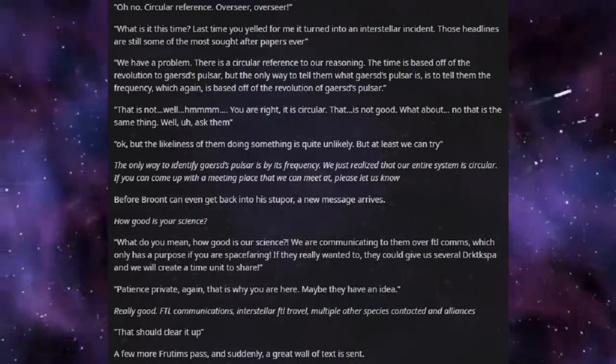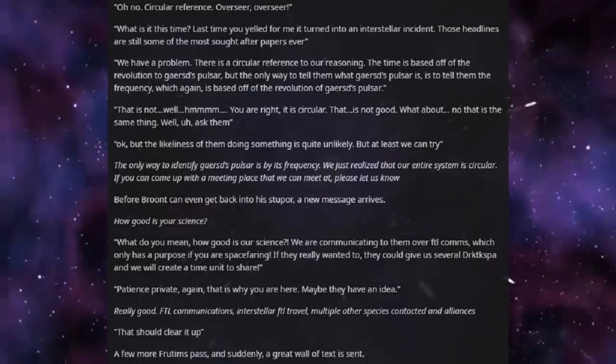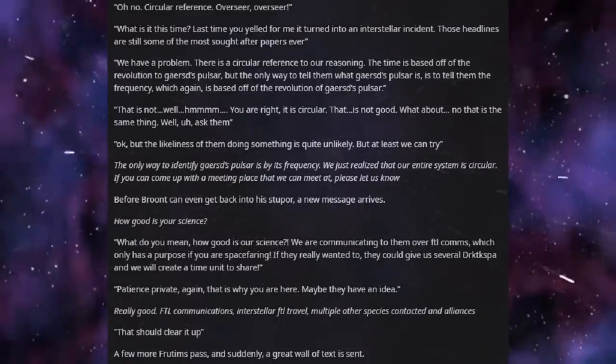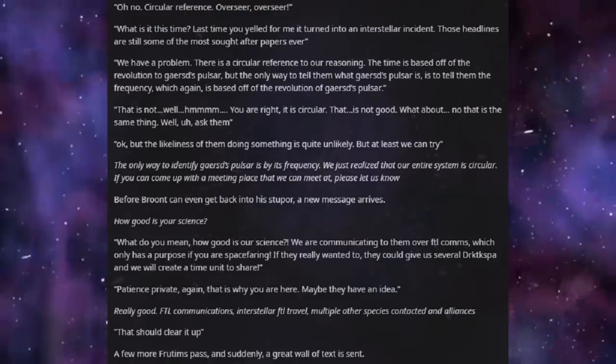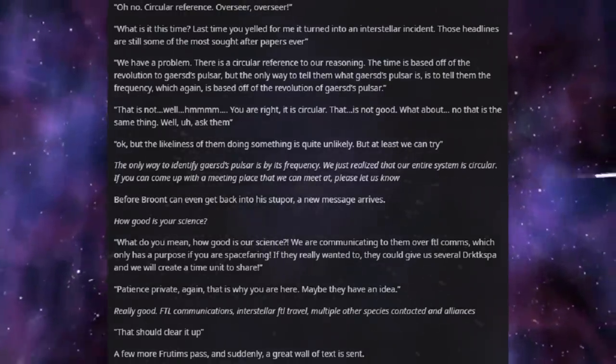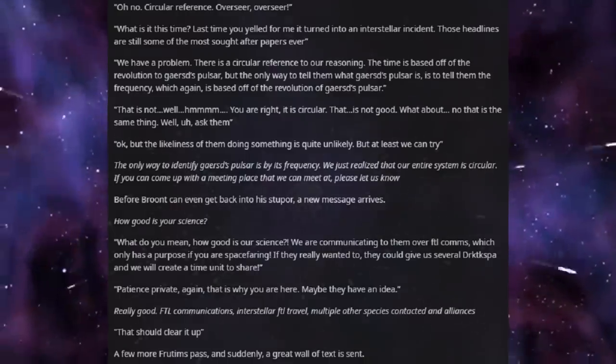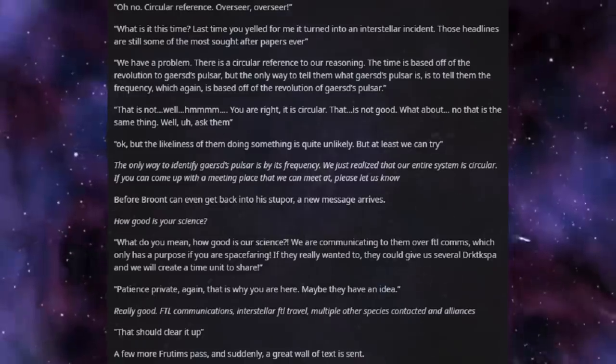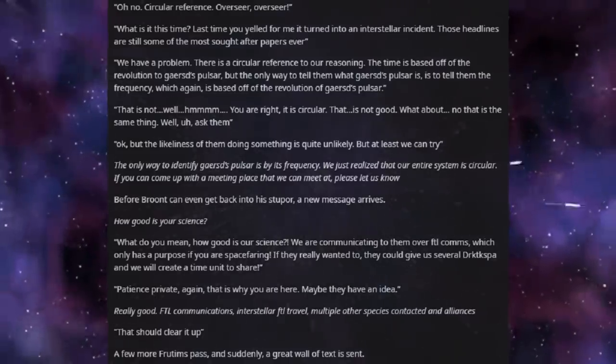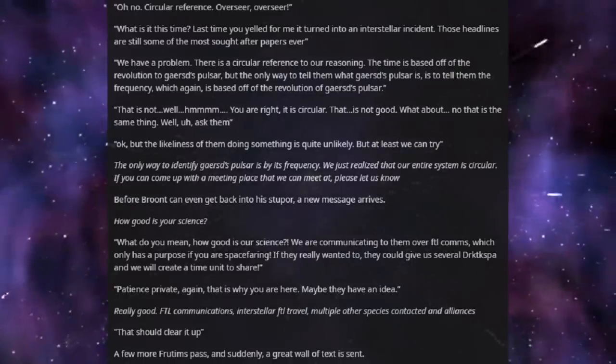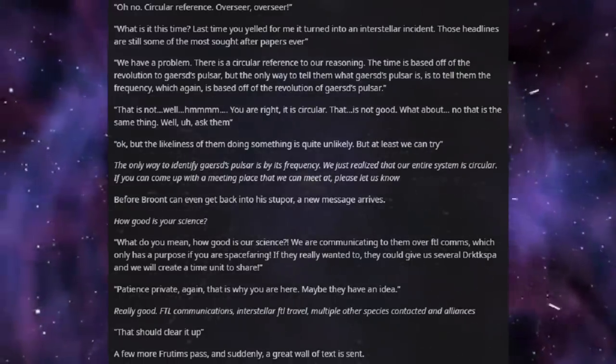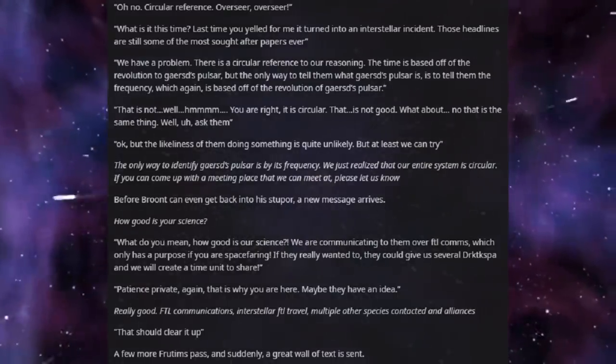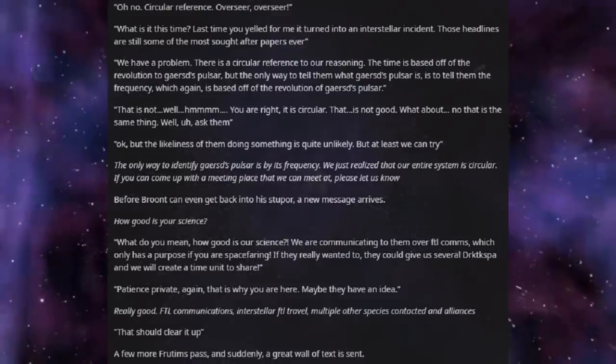Okay, but the likeliness of them doing something is quite unlikely. But at least we can try. The only way to identify Jared's pulsar is by its frequency. We just realized that our entire system is circular. If you can come up with a meeting place that we can meet at, please let us know. Before Brundt can even get back into his stupor, a new message arrives. How good is your science? What do you mean, how good is our science? We are communicating to them over FTL comms, which only has a purpose if you are spacefaring. If they really wanted to, they can give us several drispa, and we would create a time unit to share. Patience. Private. Again. That is why you are here. Maybe they have an idea. Really good. FTL communications. Interstellar FTL travel. Multiple other species contacted and alliances. That should clear it up. A few more fruit hymns pass, and suddenly, a great wall of text is sent.